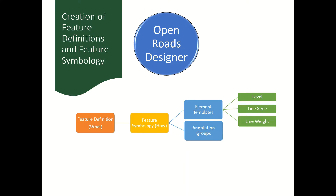Annotation group is also part of feature symbology. Within annotation group there are annotation definitions — multiple annotation definitions can form an annotation group. These are very important during drawing production. Color and all display properties come from element template, then feature symbology, then feature definition. So this is the workflow.